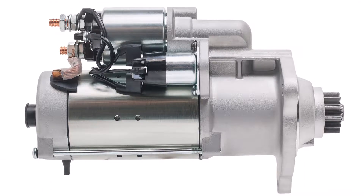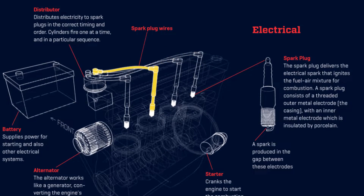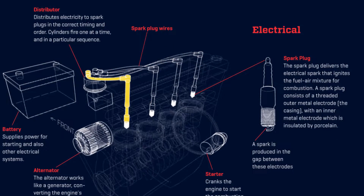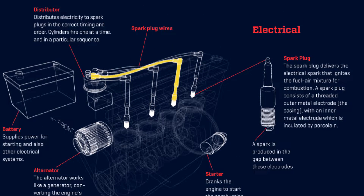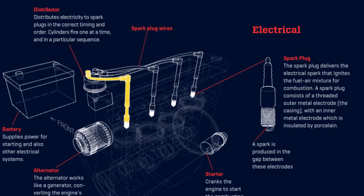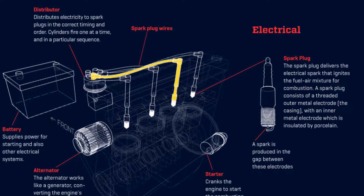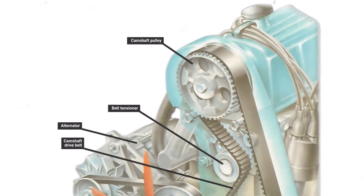Now, onto the distributor. The distributor, present in spark ignition systems, delivers high voltage current from the coil to spark plugs in the proper sequence and duration.